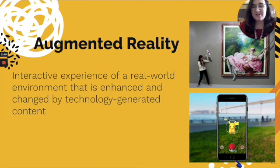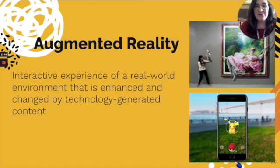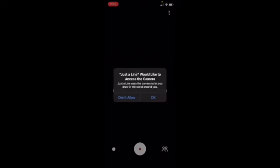So what we're going to do today is watch a little demo on how to use the app, and then we're going to be able to create our own augmented reality art piece. When you first open the Just Align app it'll ask you to access the camera. Make sure you click OK because without access to the camera it will not work.